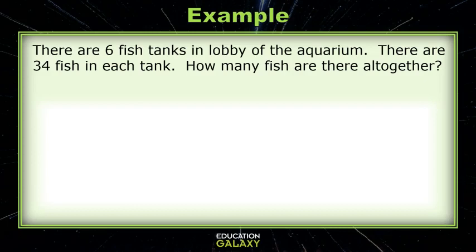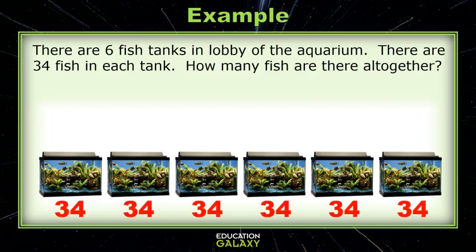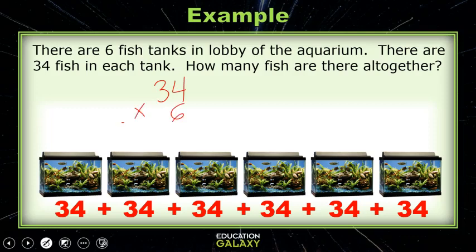Let's try this one. There are six fish tanks in the lobby of an aquarium. There are 34 fish in each tank. How many fish are there all together? So we have six fish tanks and they each have 34 fish. So this would be repeated addition, or six groups of 34, which can be solved by calculating 34 times 6. 6 times 4 is 24, so we write down the 4 and put the 2 up here. Then we do 6 times 3, which is 18, plus the 2 is 20. So we get 204.